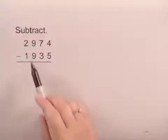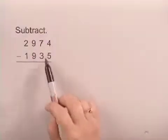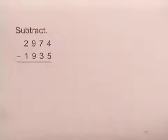In this problem, we're asked to subtract two whole numbers. We'll subtract 1,935 from 2,974.